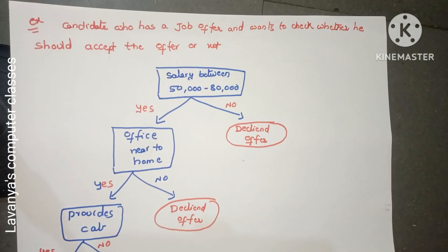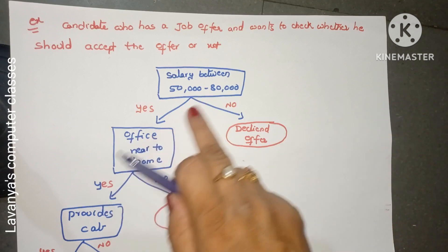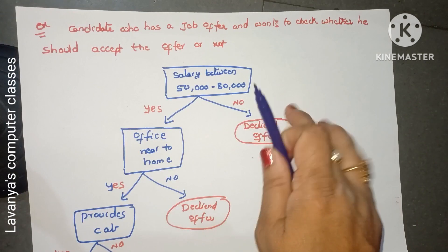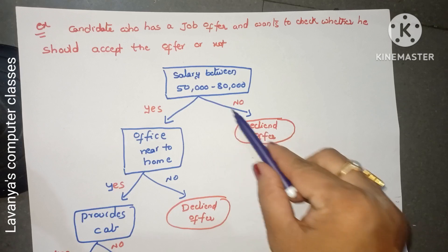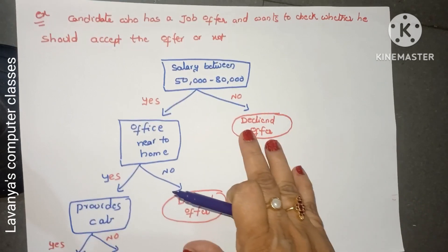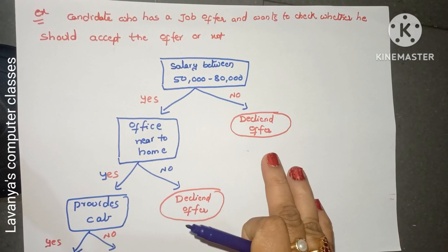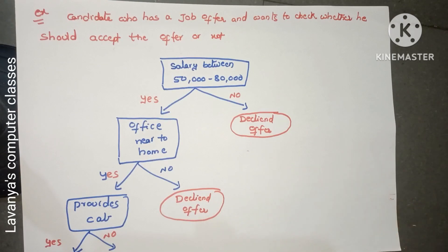Decision tree means: depending on the decisions, we classify — according to the decision rules we classify yes or no. This is an example for a decision tree. Thank you for watching. In the next video we will explain some more examples of decision tree algorithms. Thank you.